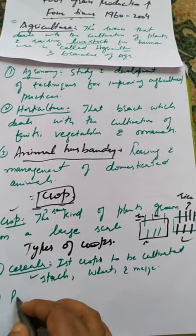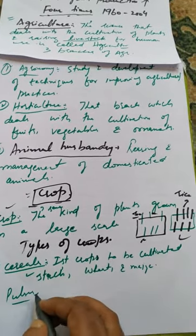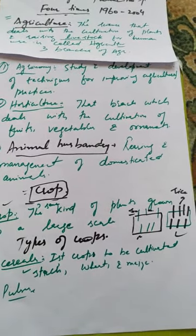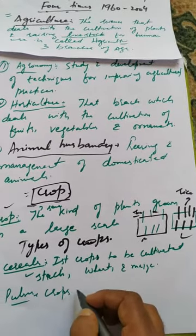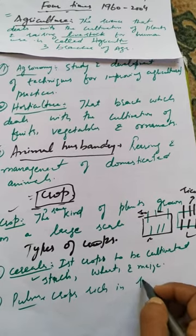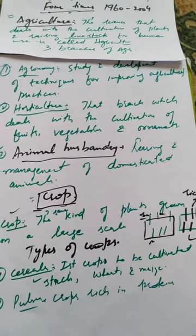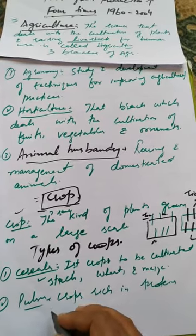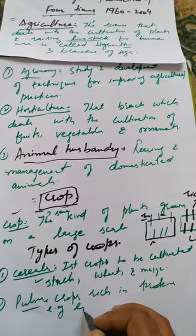The second type of crop is pulses. Pulses are those crops which are rich in proteins. Crops that are rich in proteins are called pulses.